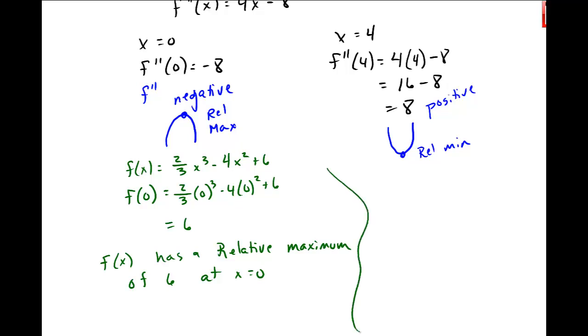And then over here, let me plug it in, f of 4, 2 thirds, 4 cubed minus 4 squared plus 6. Let me use my calculator for that one. It's a little bit more complicated. I get negative 15 and a third. I think that's negative 40, is that negative 46 thirds? Let me check it. Yeah, negative 46 thirds. So f has a relative minimum of negative 46 thirds at x is equal to 4.